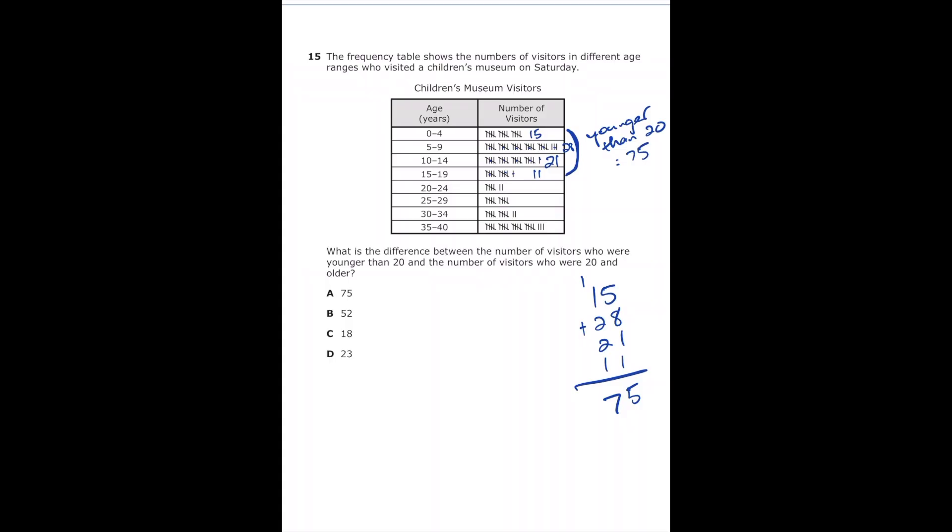And now let's find those who are 20 and older. So we have 5 plus 2, which is 7. Next section, we have 5, 10. Next section, we have 5, 10, plus 2 is 12. And then last section, we have 5, 10, 15, 20, plus 3 is 23.